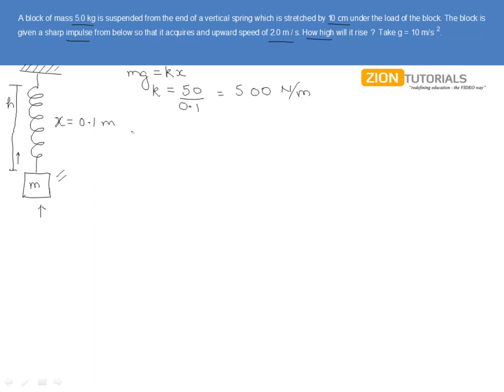If we write it down, just after the blow we have the energy equals to half mv squared, where v is the velocity of the mass in the upward direction,